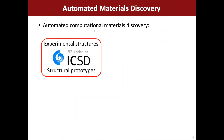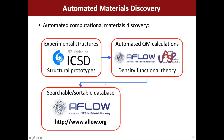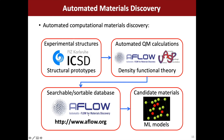The way we do automated computational materials discovery is we start from either experimental structures in databases like the ICSD, or from structural prototypes that Dr. Hicks will be talking about in a later session. We then form automated quantum mechanics calculations for these structures, typically using the VASP density functional theory package. We pipe the results into a searchable and sortable database, and then we can either interrogate it to find specific candidate materials, or use the data to train machine learning models to accelerate predictions.